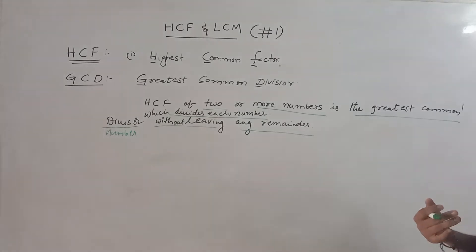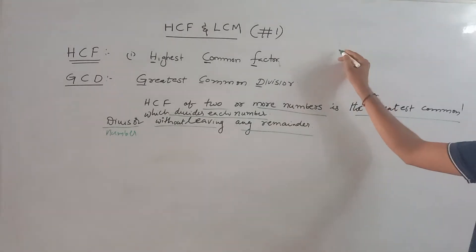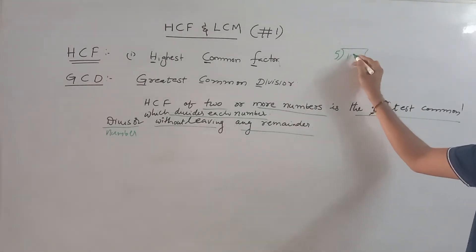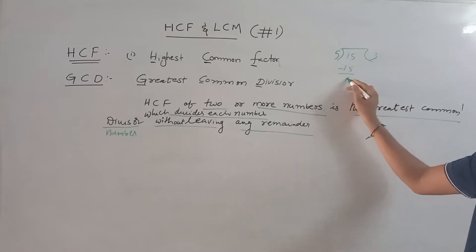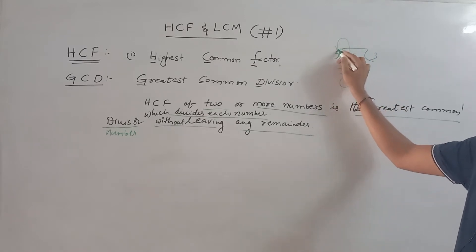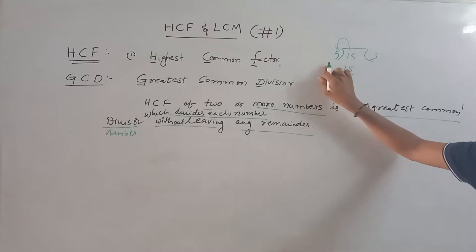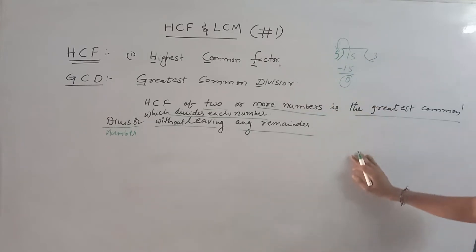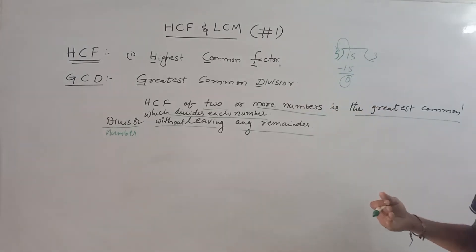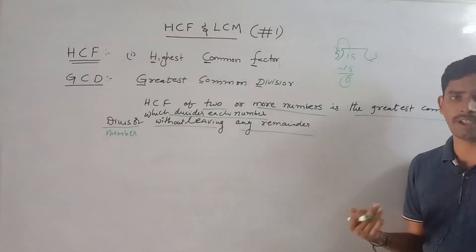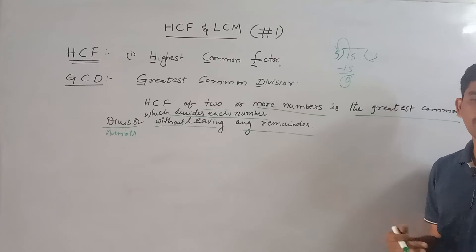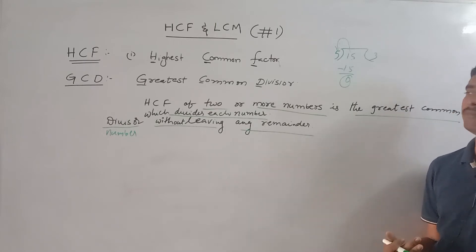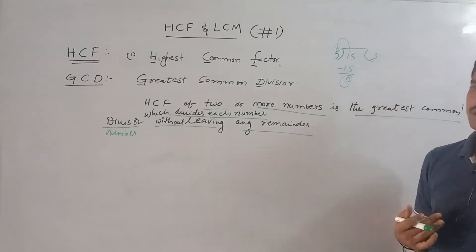If the remainder is 0, then the number is a factor. For example, 30 divided by 15 gives remainder 0, so 15 is a factor. There are many factors, and the largest factor is the GCD or HCF of the given numbers.